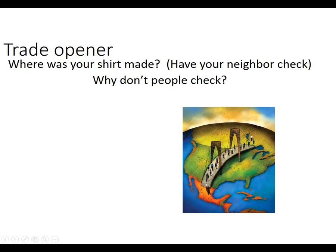Why don't people actually bother to check? My assertion is people often don't care. Some people certainly do — they try to buy clothing from a certain place — but many people are looking for quality and price. These aren't things we tend to look at. Drawing on an earlier idea, voluntary trade can make everyone better off. We trade our money for products like clothing. We don't make our own.